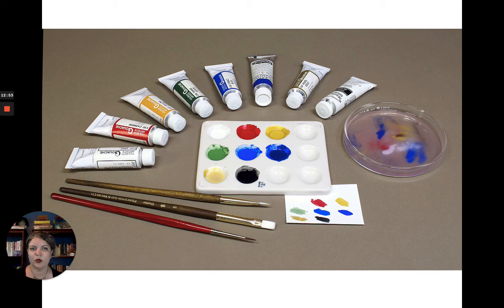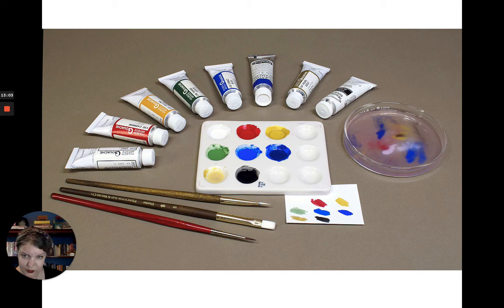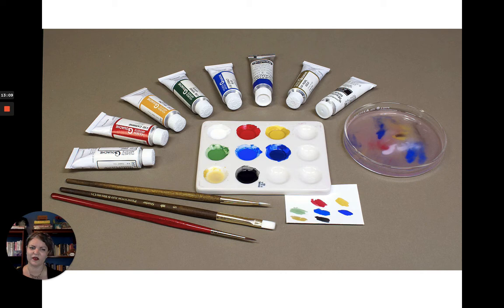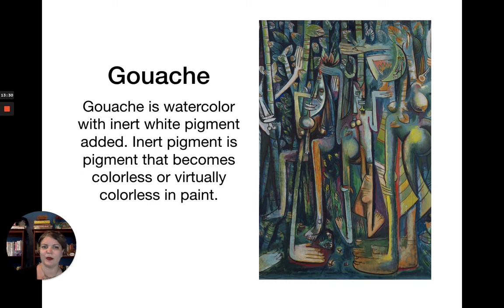This is gouache, which is very closely related to watercolor — they're very similar, but gouache generally comes in tubes. It is watercolor that has inert white pigment added, so it's an aqueous medium like watercolor but not as translucent; it's more opaque. Inert pigment is pigment that becomes colorless or virtually colorless in paint, but makes the paint more opaque and less translucent. With watercolor you can see through the layers more than with gouache, but gouache can be applied thinly or thickly, making it a very versatile aqueous medium as well.